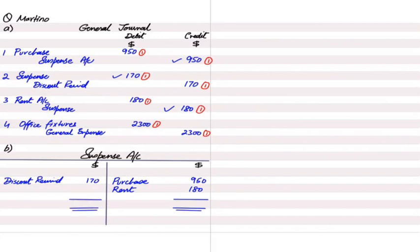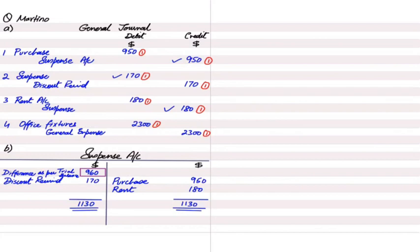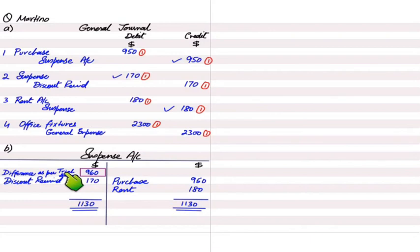Let us balance this account. The greater side is the credit side, so the greater total appears on both sides. The shorter side uses the label 'difference as per trial balance' — we do not use 'balance b/d' here. This means when we originally made the trial balance it did not balance, and the debit side was short by 960. Therefore we put 960 on the debit side. If the examiner had given us 960, we would have entered it at the start, and after correcting all errors this 960 should disappear — there is no balance left in the suspense account.